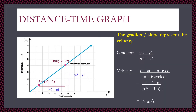In a distance-time graph, the y-axis represents distance in meters and the x-axis represents time in seconds. This graph shows uniform velocity of a moving object, meaning distance increases proportionally to time. The gradient of a distance-time graph represents the velocity of the movement.